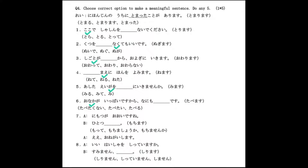The verb tabemasu (to eat) has tai form tabetai, and its negative is tabetakunai: 'Onaka ga ippai desu kara nanimo tabetakunai desu.' The verb mochimasu (to hold or carry) uses mashou ka when the speaker offers to help: 'Nimotsu ga ooi desu ne. Hitotsu mochimashou ka?' The verb shirimasu (to get to know) uses the negative shirimasen — importantly, the negative is not shitte imasen, it is shirimasen. This is an exception you must remember.